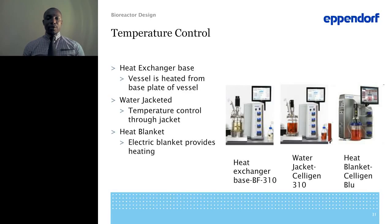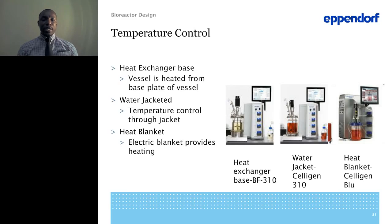Looking at temperature control: on the left is a bioreactor with a heat plate distributing heat from the bottom and circulating it up through the culture via the impellers. In the bottom is a bioreactor using a jacketed vessel with water as the heat distributor. On the right is a single-use vessel that uses an electric heating blanket to provide temperature control.